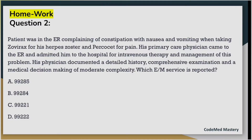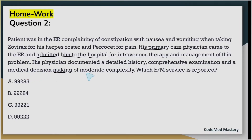Homework question number two: A patient was in the emergency room complaining of constipation with nausea and vomiting when taking Zovirax for his herpes zoster and Percocet for pain. His primary care physician came to the ER and admitted him to the hospital for intravenous therapy and management of his problem. The physician documented MDM of moderate complexity. What E&M service is reported? Check option A: 99285.